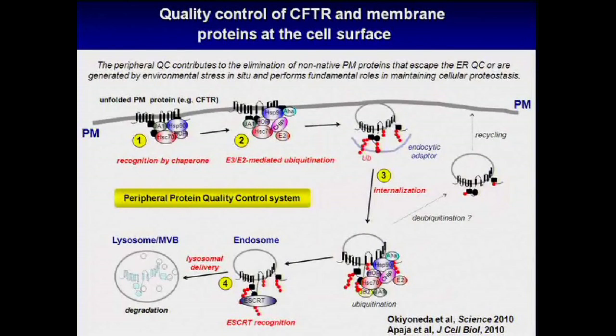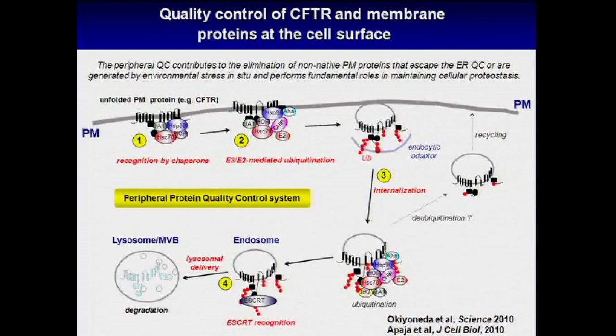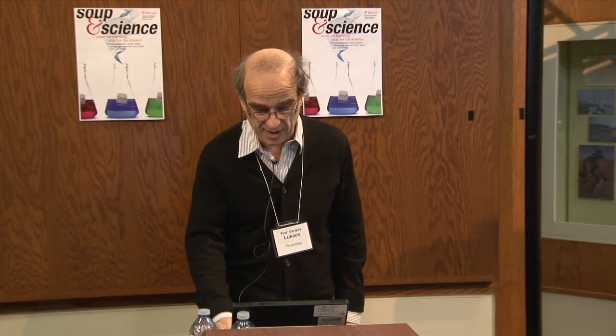The second project the lab is interested in is understanding how impaired plasma membrane proteins are removed from the cell surface. We have a model to illustrate that essential process, which maintains cellular homeostasis. I can give more details in the informal discussion. Thank you for your attention, and to those who did the work and funded the project.